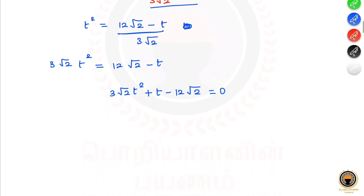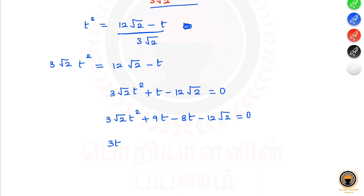In the quadratic equation, we do simplification. We have 3 root 2 t squared, plus t, now split as 90 minus 80 terms. From the first two terms, take 3t minus 1 common — remaining is root 2 t. For the third and fourth terms, take 4 root 2 common — remaining is root 2 t plus 3.